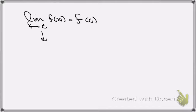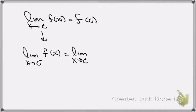Of course, for the limit to exist, this means that the limit from the left of f of x must be equal to the limit from the right of c, of f of x. So, the two-sided limits have to be equal to f of c.